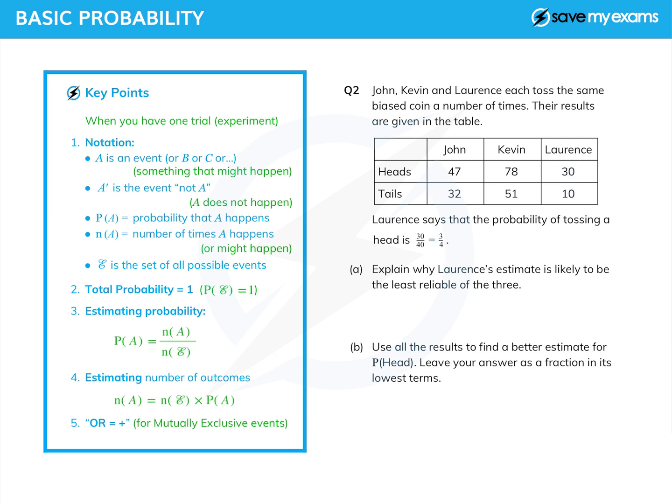And let's explain why Lawrence's estimate is likely to be the least reliable of the three. Well, if you just look at it, Lawrence is obviously a little lazy, because Kevin has tossed it many more times. And John has also tossed it more times. So we can just say that in some way.